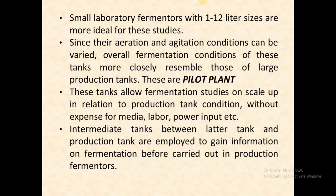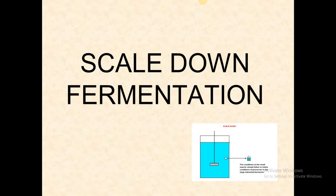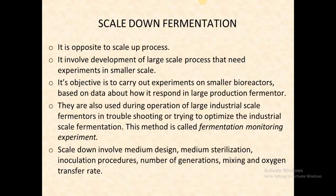Intermediate tanks between the pilot plant tank and the production tank are also employed to gain information on fermentation before it is carried out in the production vessel. So there is a pilot plant and also an intermediate tank before scaling up to the large industrial tank. Scale-down fermentation is the opposite of scale-up. Once fermentation is running in an industrial tank and a problem arises, we need to scale the process back down. Scale-down involves development of large-scale process insights through experiments at smaller scale, and is used to carry out experiments on smaller bioreactors based on data about how the process responds in the large production fermenter. Scale-down is also used during operation of large industrial-scale fermenters for troubleshooting or optimizing fermentation. This method is called the fermentation monitoring experiment.